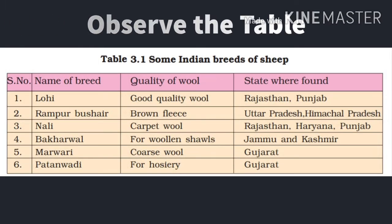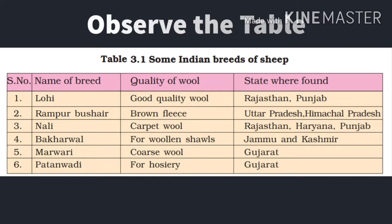In our lesson, there is a table — Table 3.1 — which lists the names of animals, the texture of their wool, the quality of their wool, and also the states where we can find these animals. You have to go through this table thoroughly to get an idea about the varieties of sheep, which type of wool they provide, and where their location is.